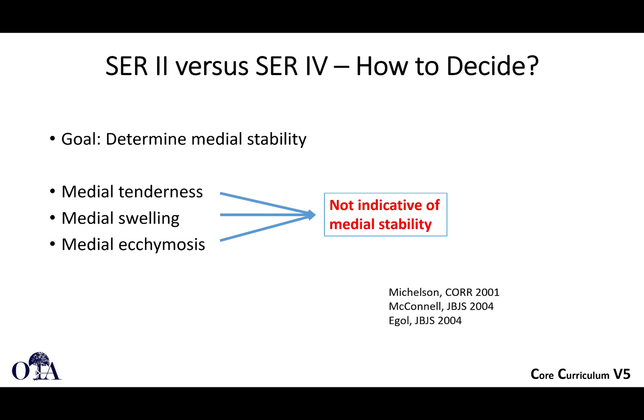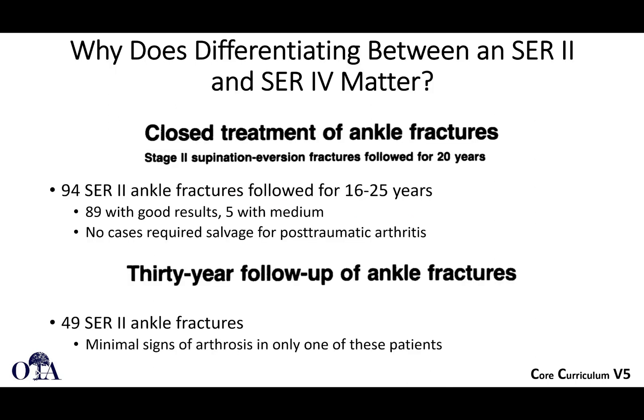This is a big question that always comes up: if you see an SER 2, how do you know it's not a ligamentous SER 4 where you're just not seeing the widening on the static view? One thing you can assess at the initial point of care is: is there medial tenderness, deltoid tenderness, medial swelling, medial ecchymosis? Unfortunately, multiple studies have shown it's not that indicative of medial instability.